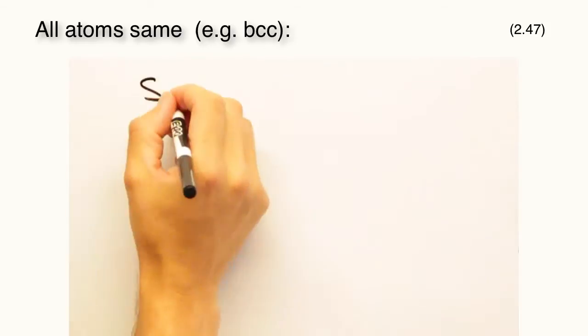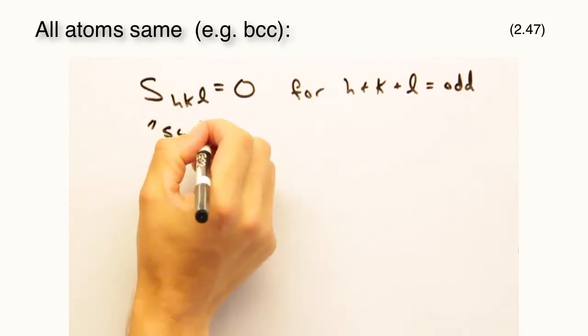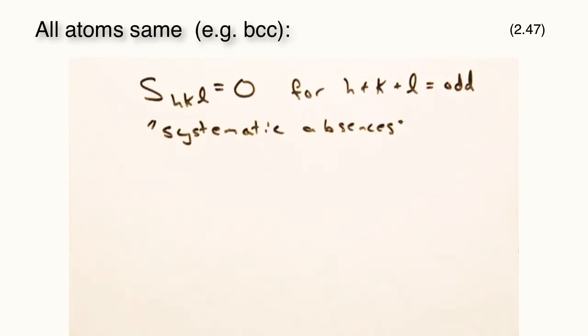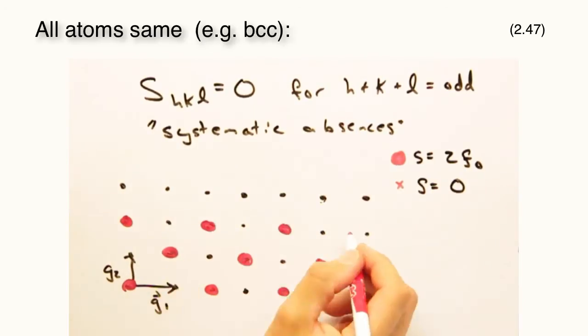In the case where all the atoms are the same, we should see systematic absences in our reciprocal lattice as shown in this g3 equals half slice of a BCC cell.